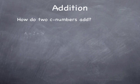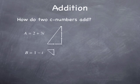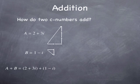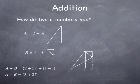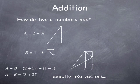How do you add two complex numbers? It's pretty easy: the real parts add and the imaginary parts add. So if you have a complex number that's the sum of two complex numbers, you add the real parts to get the real part of the result, and you add the imaginary parts to get the imaginary part of the result. That's exactly the same way vectors add — complex numbers add just like vectors do. You can think of two phasors adding together the same way two vectors add in two dimensions.